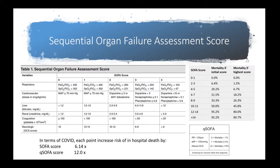The SOFA score looks at variables across different organs: respiratory, cardiovascular, liver, renal, coagulation, and neurology. Each section is scored from 0 to 4, and a higher SOFA score is associated with higher mortality. There is also a quick SOFA score, which only measures respiratory rate, blood pressure, and GCS, and a higher number of points correlates with a higher mortality rate.